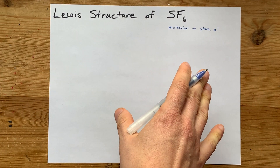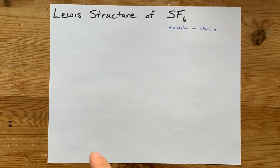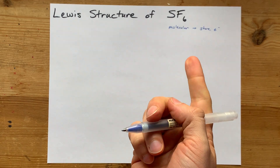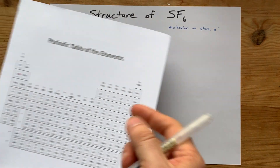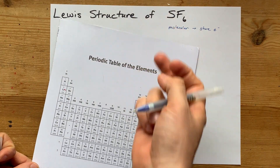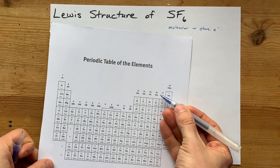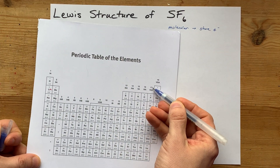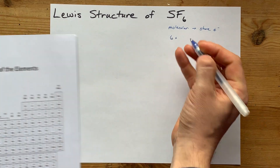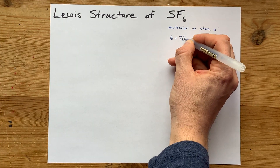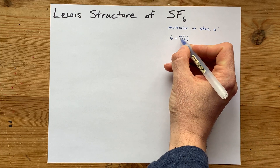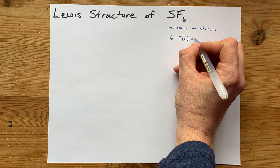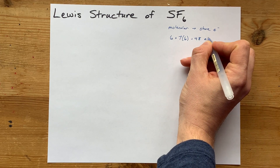This is different from an ionic compound where there would be a transfer from one to the other. The way I draw the Lewis structure for molecular compounds is to first count the number of valence electrons. Sulfur, here in group 16 of the periodic table, will bring 6 electrons, and fluorine in group 17 will bring 7 valence electrons, but there are 6 of them. So that's 7 times 6 fluorines, plus the extra 6, gives us 48 electrons total.